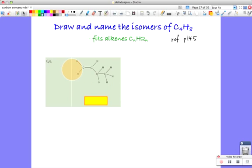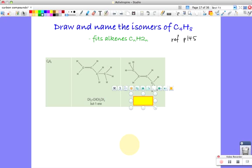What isomers could it have? The first one has four carbons in a row with a double bond between the first and second. Numbering from the end closest to the double bond, this is but-1-ene. Double bonds take priority over side groups. Another isomer has the double bond in the middle, so it's but-2-ene. This number tells us where the double bond is.